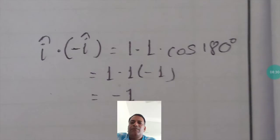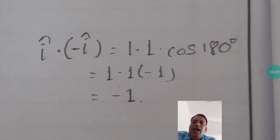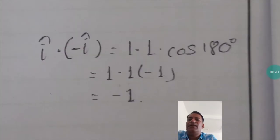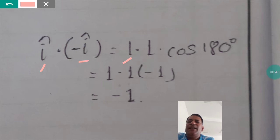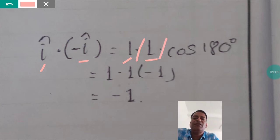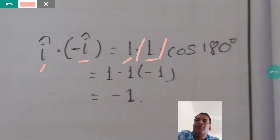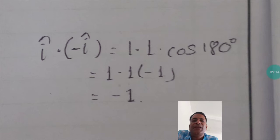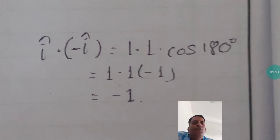Now, i-cap dot minus i-cap. The magnitude of i-cap is 1, and the magnitude of minus i-cap is also 1 — not minus 1, because magnitude means taking the modulus (just as the modulus of minus 2 is 2). The angle between i-cap and minus i-cap is 180 degrees. Cos 180 equals minus 1. So i-cap dot minus i-cap equals minus 1.